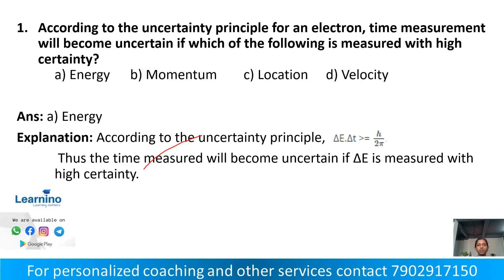First question: according to the uncertainty principle for an electron, time measurement will become uncertain if which of the following is measured with high certainty? Option A: energy. Option B: momentum. Option C: location. Option D: velocity.